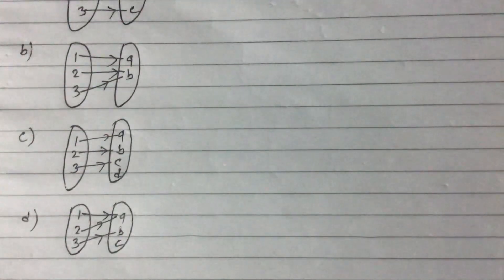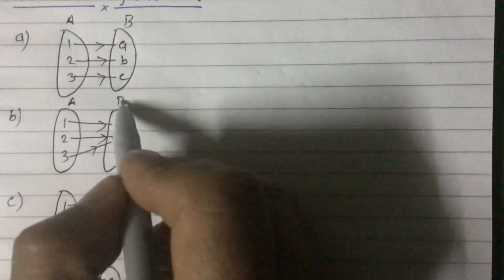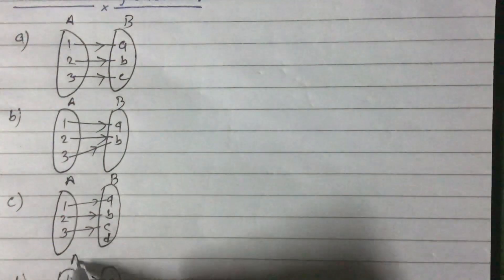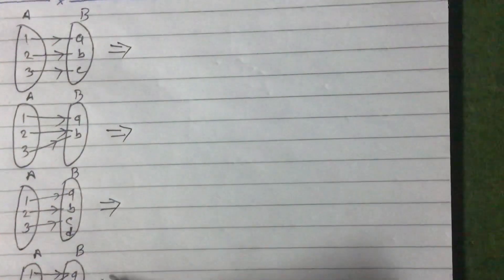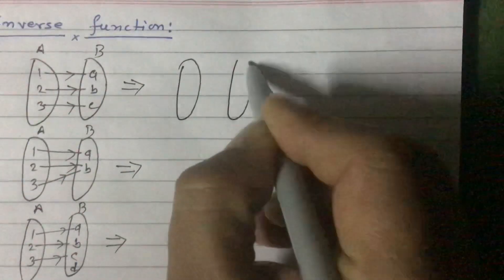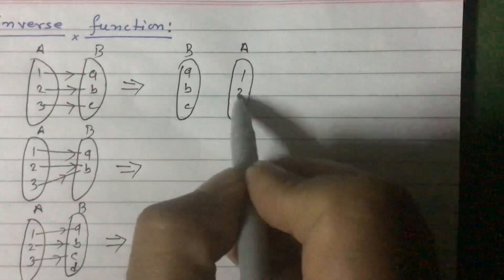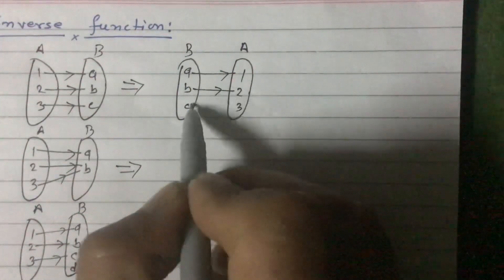Now I would like to interchange the domain and range. All four types of functions are from set A to set B. If I interchange the domain and co-domain, let us see what happens. For function A, the new mapping from set B to set A gives: A maps to 1, B maps to 2, and C maps to 3.